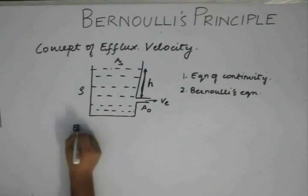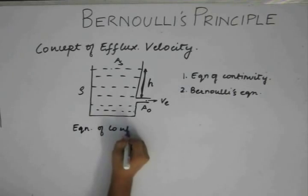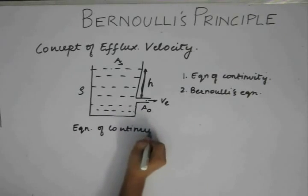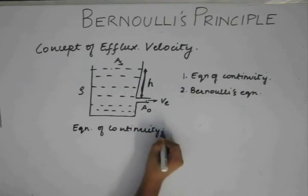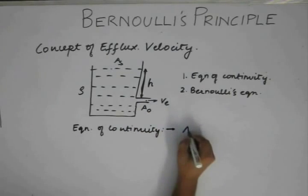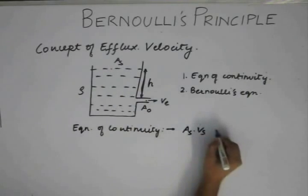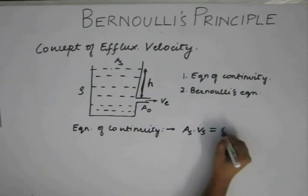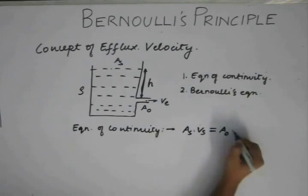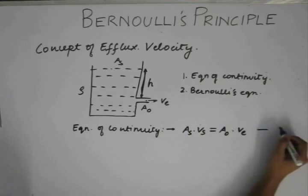The equation of continuity in this case will be As times whatever velocity it has on the surface Vs, and this is going to be equal to Ao times the velocity of efflux Ve. This is our equation 1.